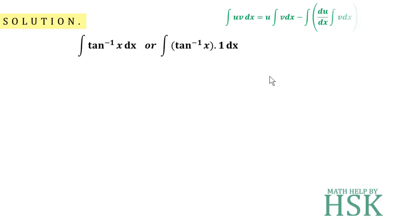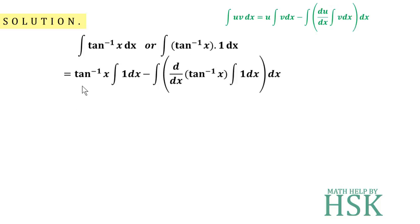We can apply the formula of integration by parts by assuming tan inverse x as the first function and 1 as the second function. So we get tan inverse x times the integration of 1, minus d/dx of tan inverse x times the integration of 1.